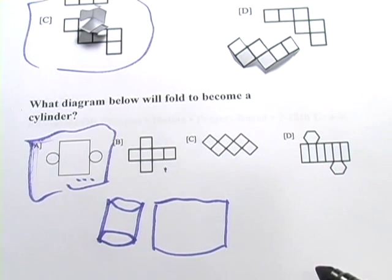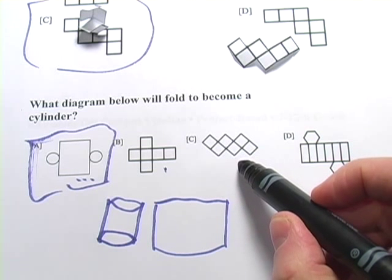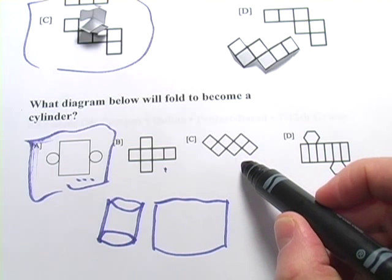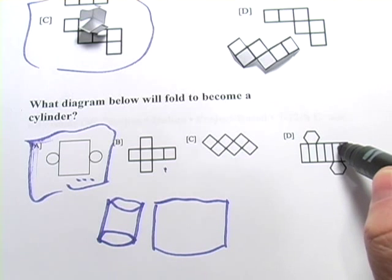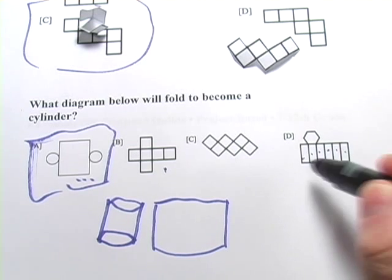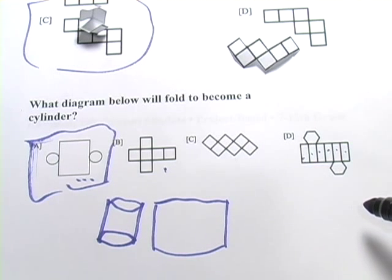This of course would be a cube. I'm not sure what that would be. Maybe that would be a cube or maybe something weird. That looks like it would be a hexagonal prism. Yeah, it looks like the right number of sides for a hexagon. All right, let's do another one here.